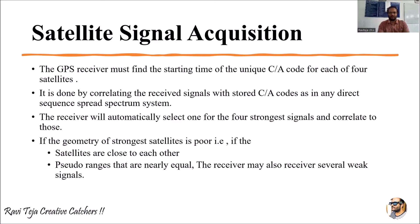Based on the stored C/A code in the signal received by the GPS receiver, we are able to find out which satellite we are communicating with, or what collection of satellites we are communicating with.